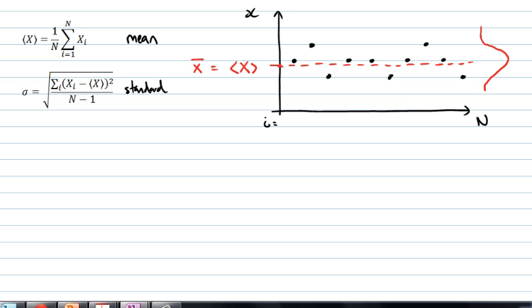And then as I move further away from the mean value, the number of points I'd find would get less and less. The mean value tells you where the peak is. The standard deviation tells you how wide the distribution is.